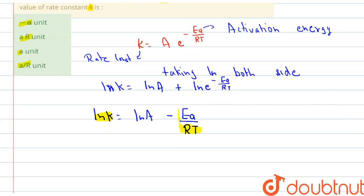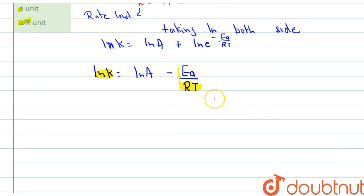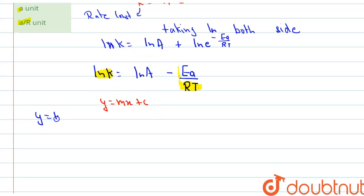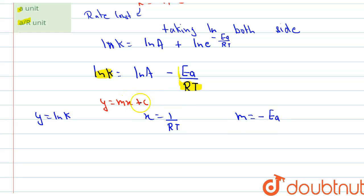As we know, the standard equation of a line is y equals mx plus c, where m is the slope and c is the y-intercept. Comparing, y is lnk, x is 1/RT, slope m equals minus Ea (activation energy), and intercept c equals lnA.